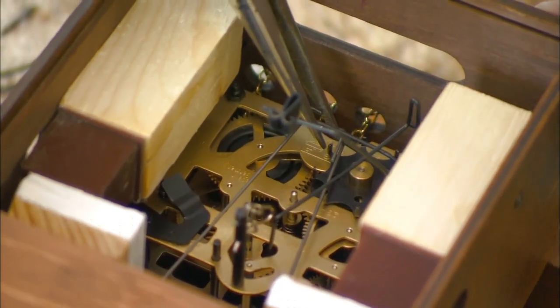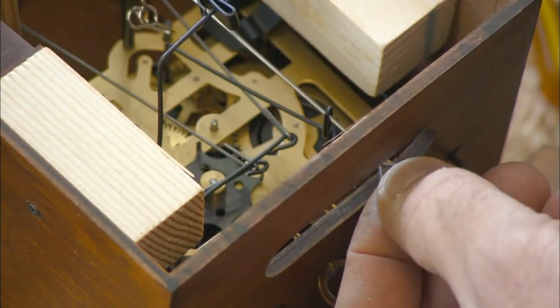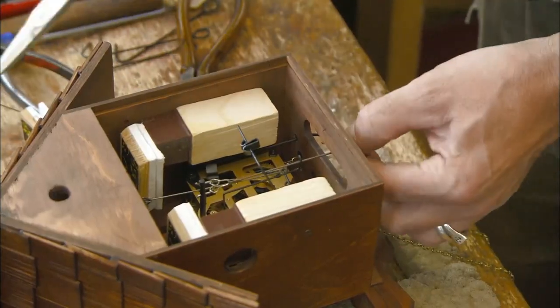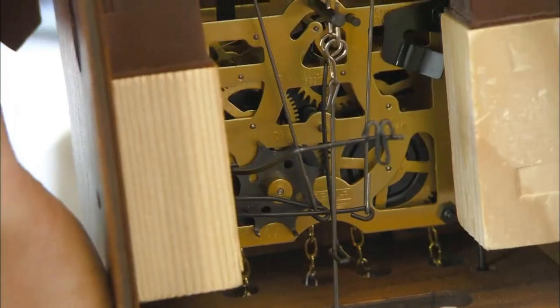After connecting the bellows to the movement, there's just one step left, running a wire from the movement through the bottom for the pendulum. The technical choreography can now begin.